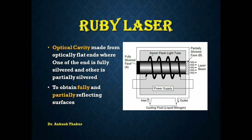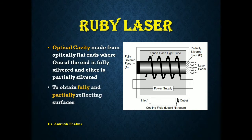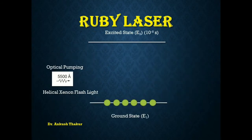The optical cavity is generally made with the help of coatings done at the ends of the crystal. One end is partially coated and the other end is fully coated to produce the optical cavity. Let's start the working of the ruby laser.